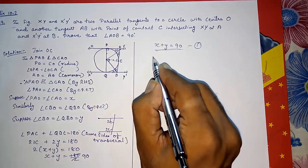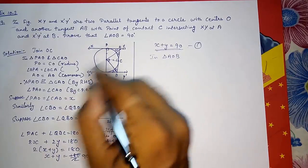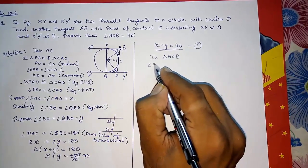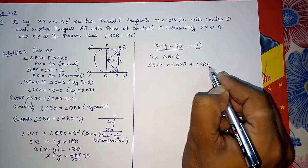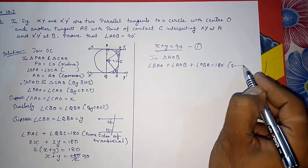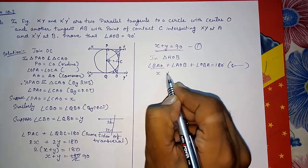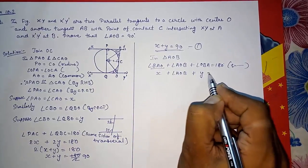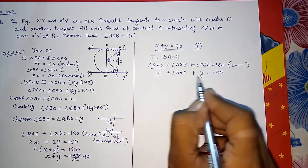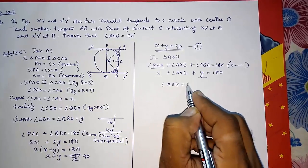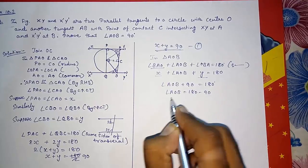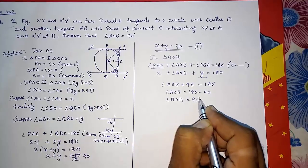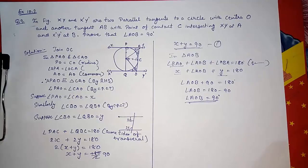We have x plus y equals 90 degrees, but we want angle AOB equals 90 degrees. In triangle AOB, by the angle sum property: angle BAO plus angle AOB plus angle OBA equals 180 degrees. Substituting: x plus angle AOB plus y equals 180 degrees. Since x plus y equals 90, we get angle AOB plus 90 equals 180, therefore angle AOB equals 90 degrees. That is how we solve this question. Thank you for watching — please subscribe to my channel!